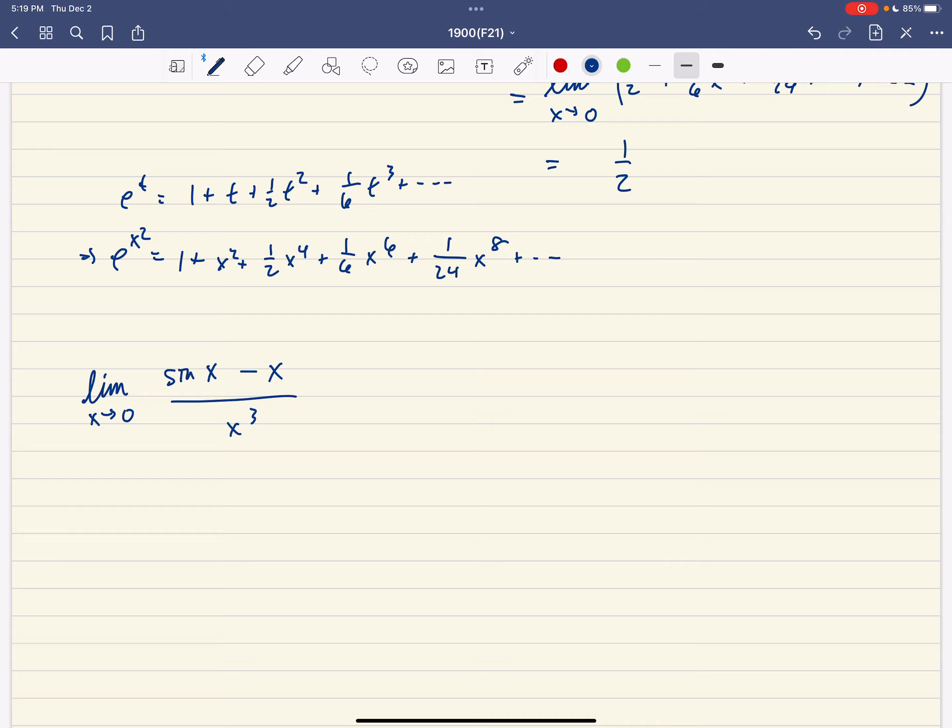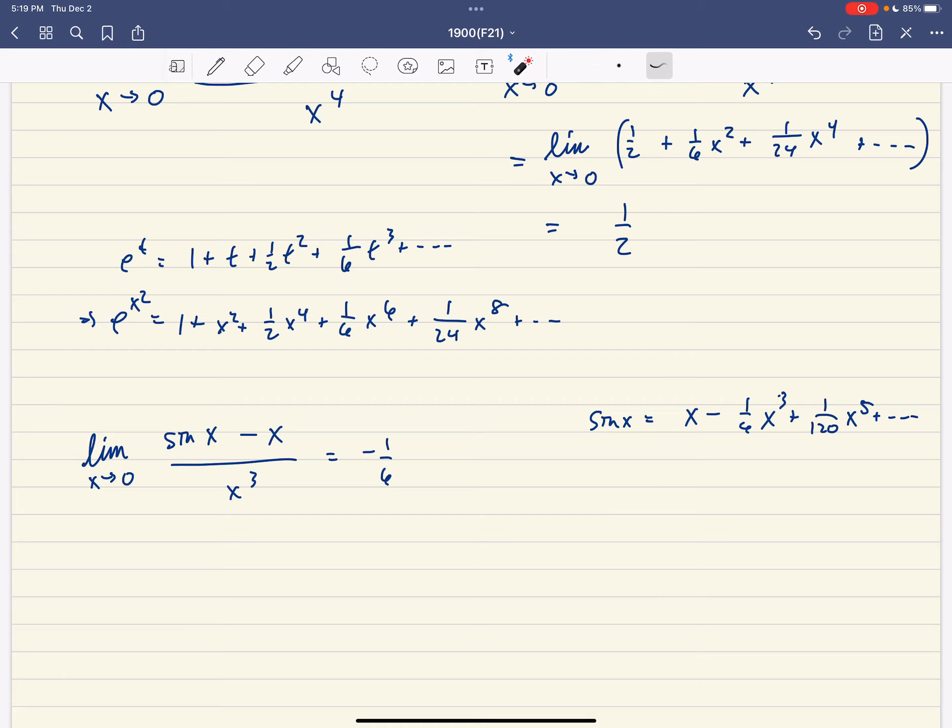Why do I think it's going to be negative 1 sixth? Well, I know that sine of x is x minus 1 sixth x cubed, plus 1 over 5 factorial x to the 5th, and so on. And if we subtract x from both sides, then that x moves over. And then we divide by x cubed. We're going to end up with this constant in front, that negative 1 sixth.